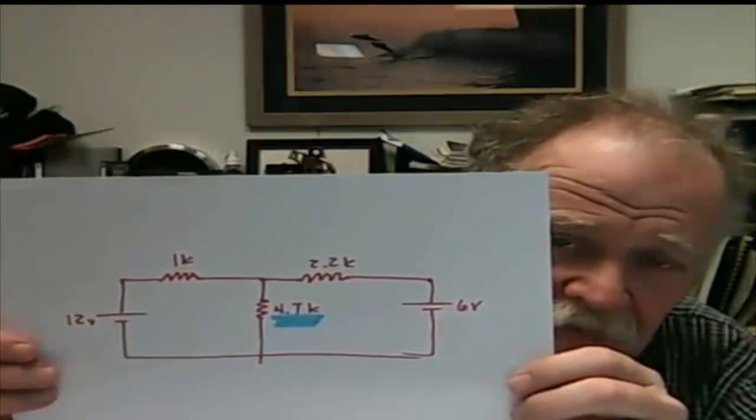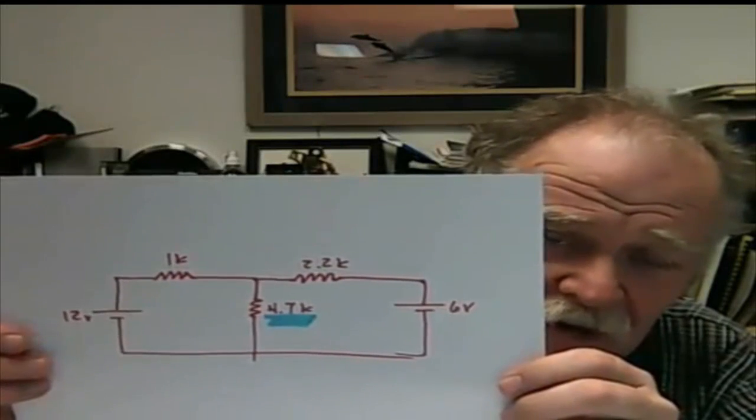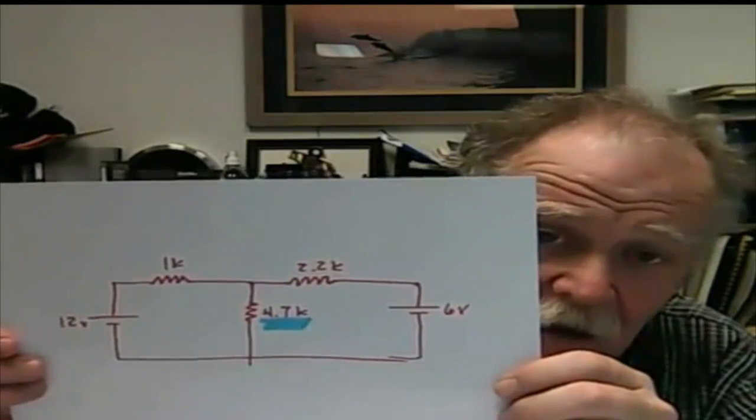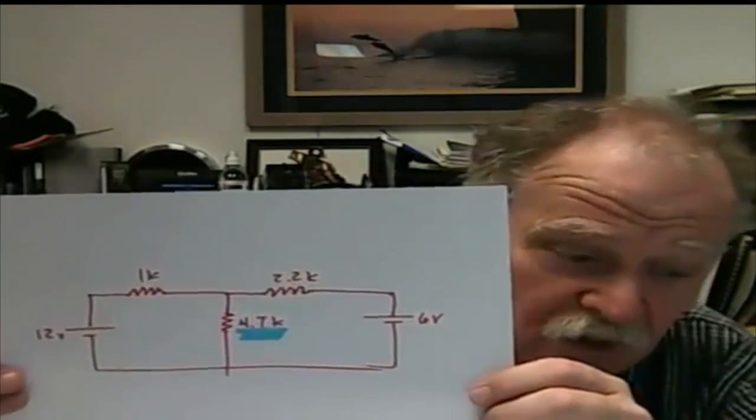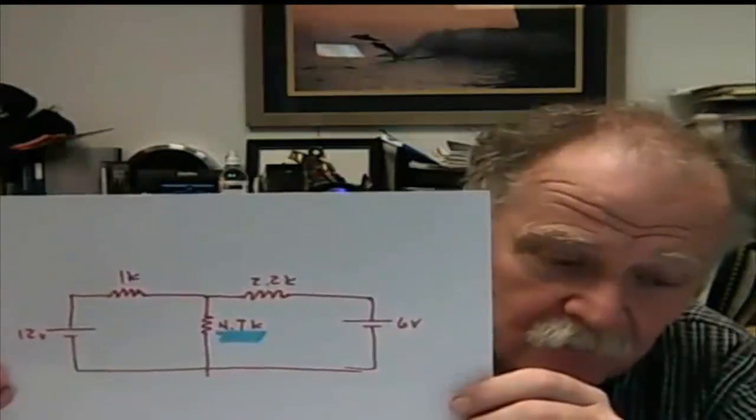But otherwise, we've got the 12-volt and the 6-volt sources along with a 1K and a 2.2K resistor along the top. The 4.7K in your lab will be a 1.5K resistor. First, we will be connecting up the entire circuit.